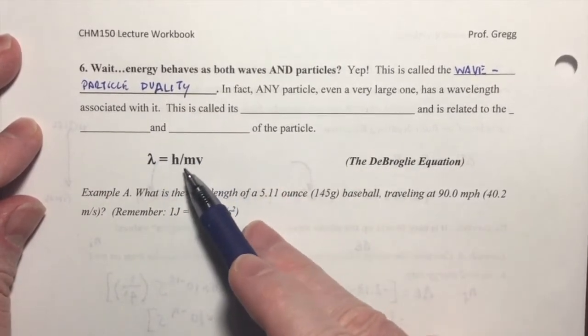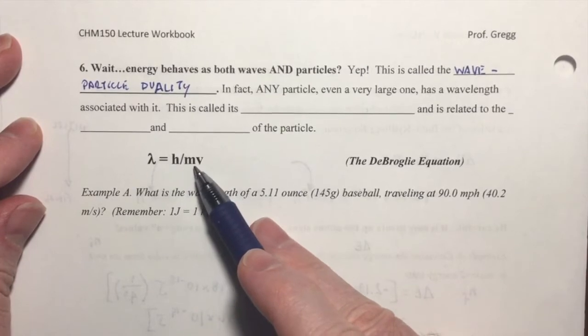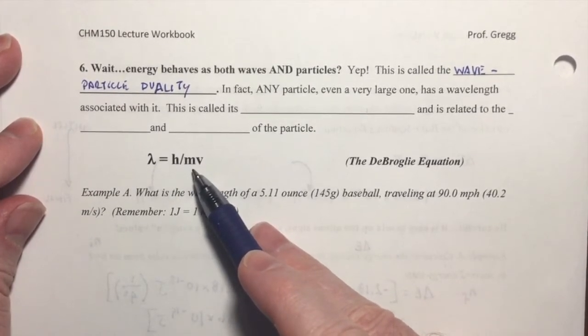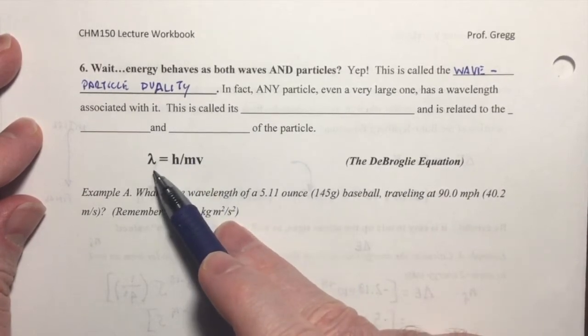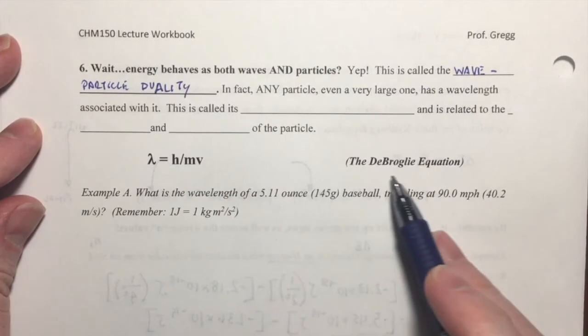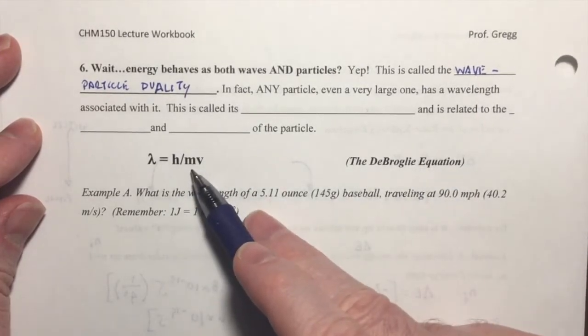But you can see that in this equation, as the mass, which is in the denominator, becomes very, very, very small, then the wavelength gets larger. And so the wavelength does become significant. So the de Broglie equation is really useful for dealing with small particles like electrons and protons.